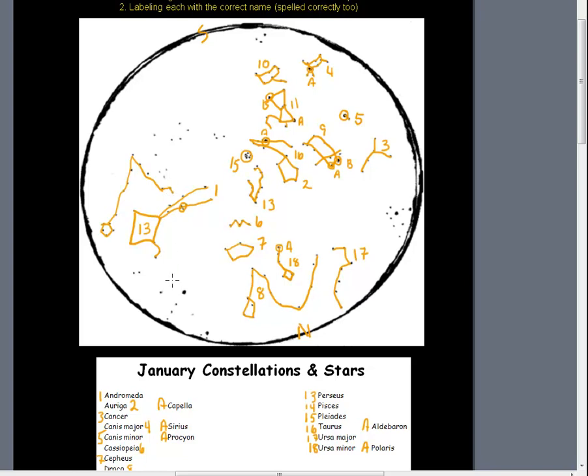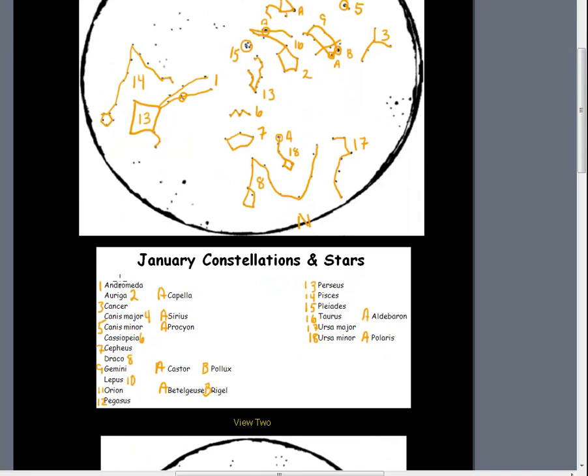Now we can see the end of Pisces. So I'm going to give number 14 to Pisces. I'm going to have to start going through some of these because I want to make sure I've got them. Andromeda, Auriga, Cancer, two dogs, male and a female king and queen, the dragon, the twins, the bunny, the hunter, the flying horse. This is number 12. We have Perseus, Pisces, Pleiades, Taurus, and those. We found every one we're supposed to find.